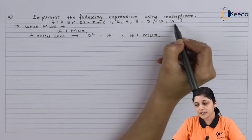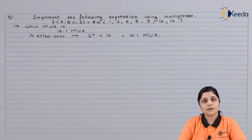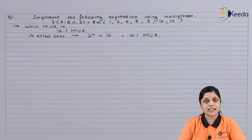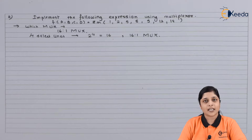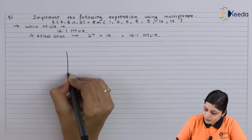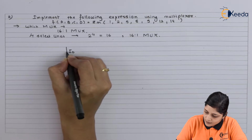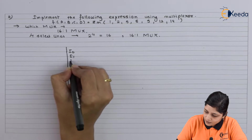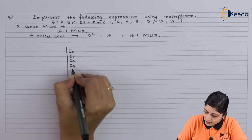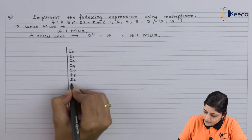After that, you have to apply all the present minterms to logic 1, calculate the remaining minterms and connect them to logic 0, then apply the select lines and show the output. Let's draw the multiplexer diagram. For the 16-to-1 MUX, draw inputs I0, I1, I2, I3, I4, I5, I6.